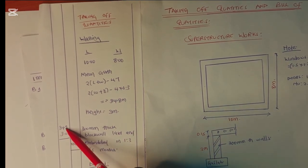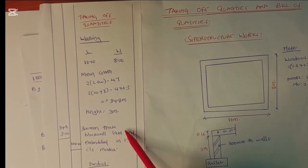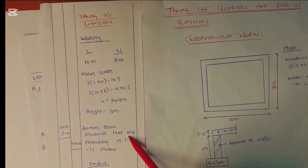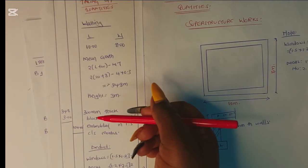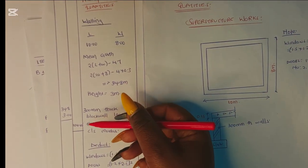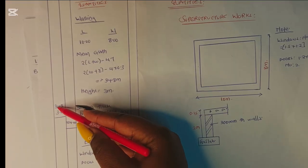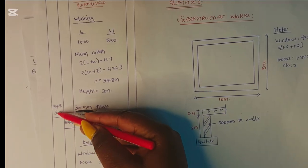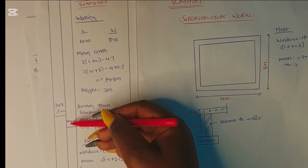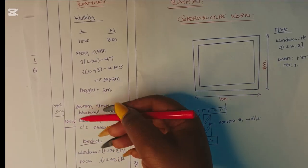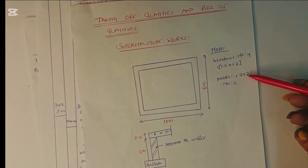We book that as 34.80 by 3.00, described as 300 millimeters thick block wall laid and embedded in 1:3 cement sand mortar. To prepare the BoQ we need the volume, so we multiply 34.8 by 3.00 to get 104.40. This is what we carry to our BoQ, but remember we have some doors and windows.